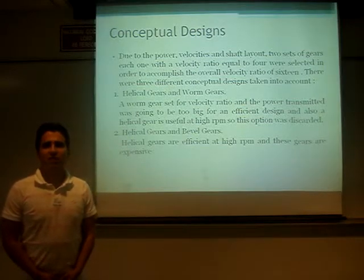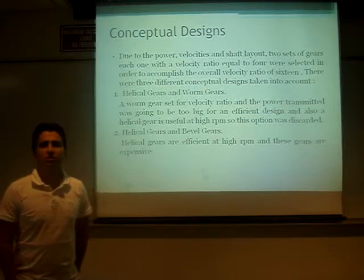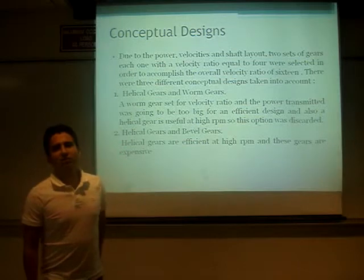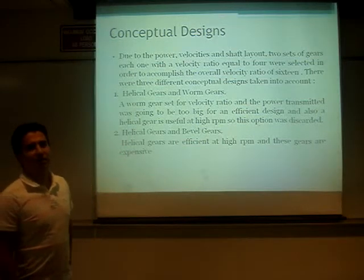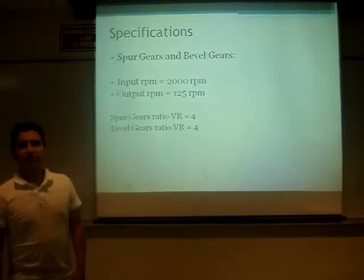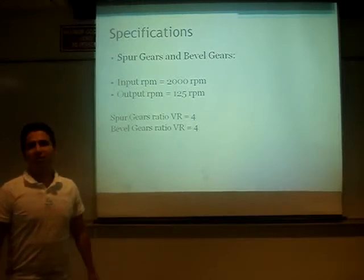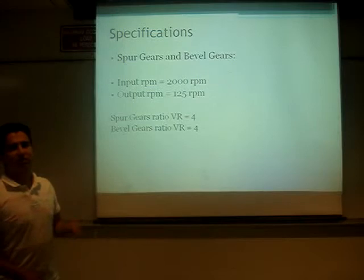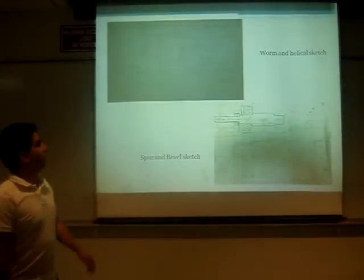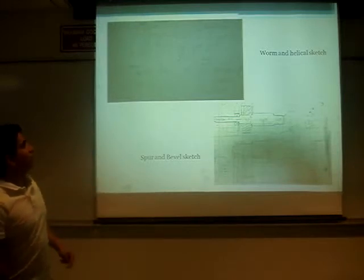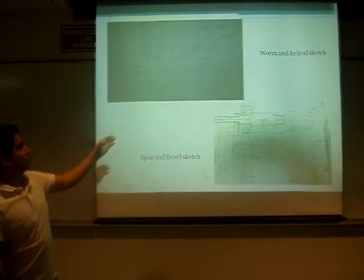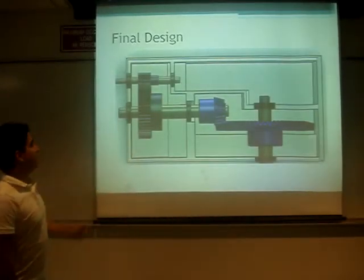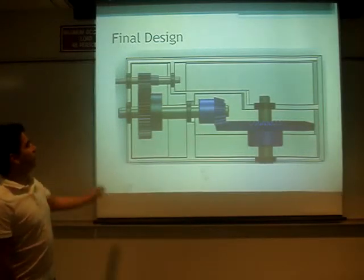There were three different conceptual designs taken into consideration. The first one was helical gears and worm gears. We found out that the helical gears were more expensive than the spur gears. For the specification, we had an input RPM of 2000 and the output was 125 RPM, and we tried to make the velocity ratio of each set of gears equal to 4. We can see two different sketches of the first two designs — the worm gear sketch and the spur and bevel gear sketch. Finally, we decided to go with the spur gear and the bevel gear. Here we can see the final design.